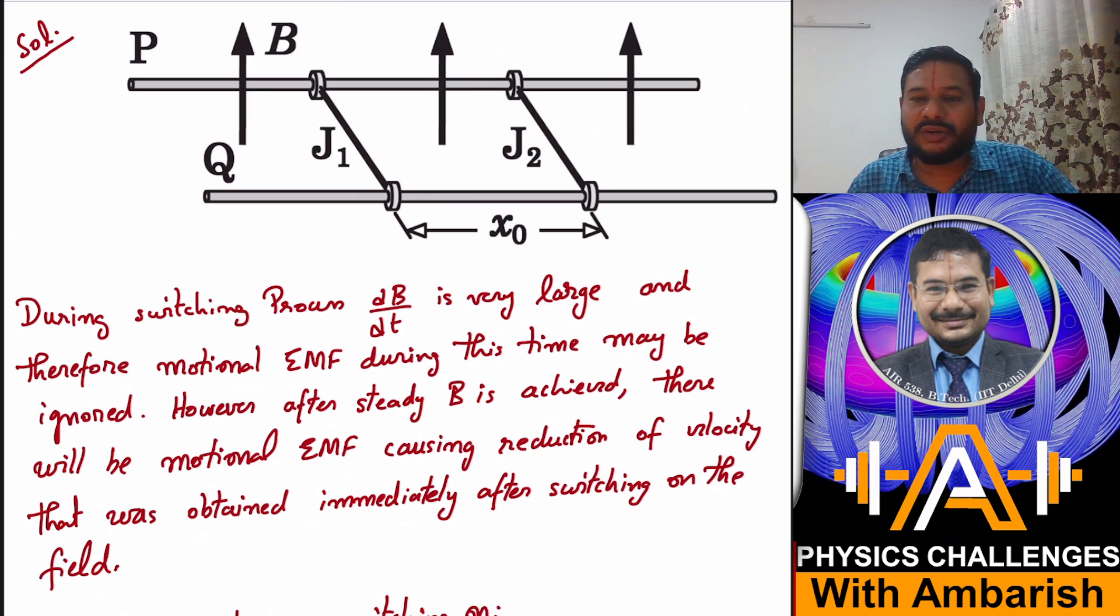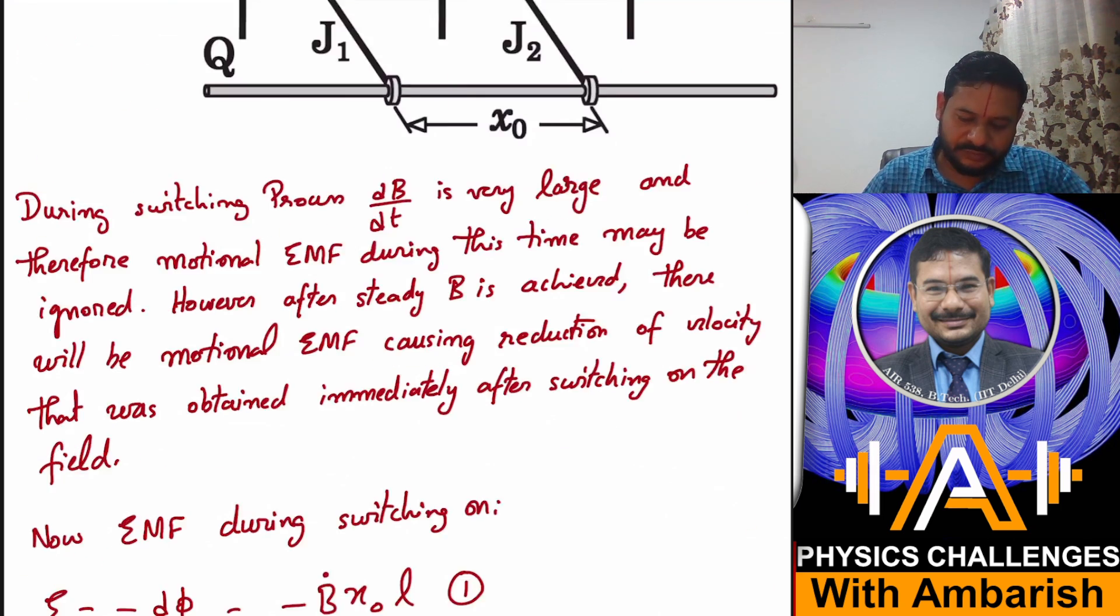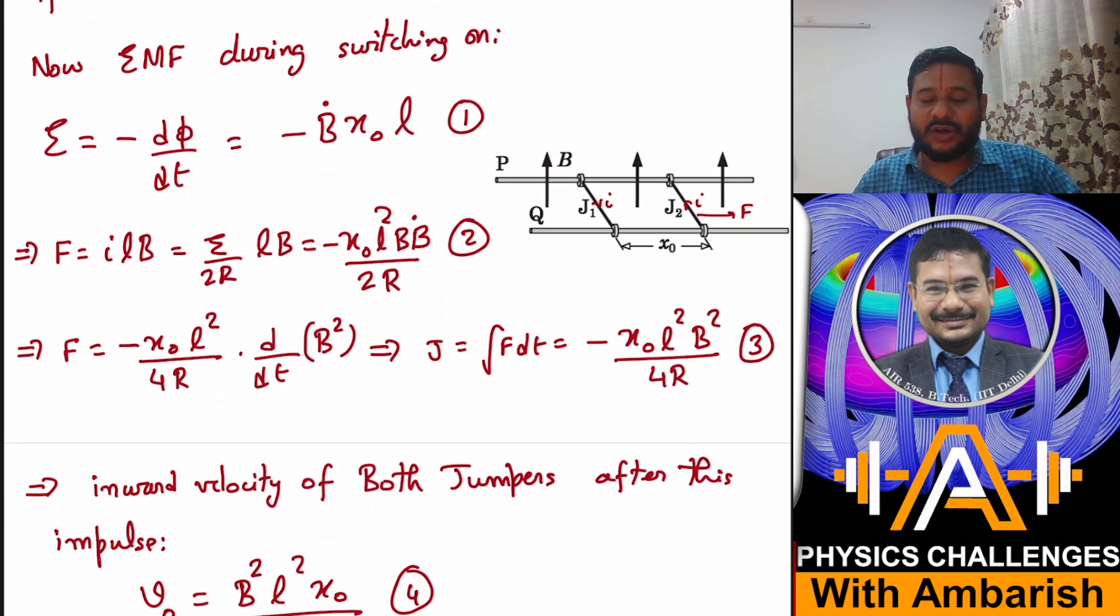We'll see how that will change because what will be the cause of that - there's motional EMF. According to Lenz's law, the cause of motional EMF is rods coming together or maybe they'll be going out. But in any case, whatever is the direction of velocity, that will have to be opposed by Lenz's law.